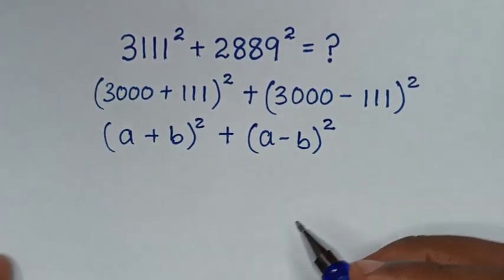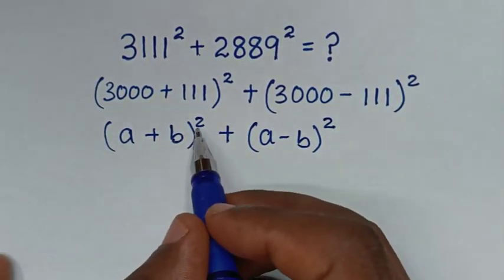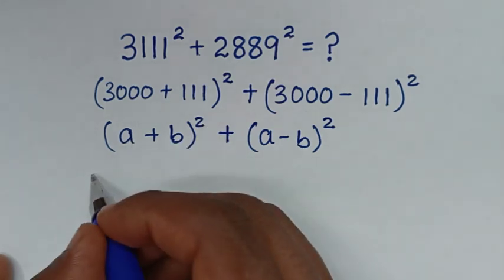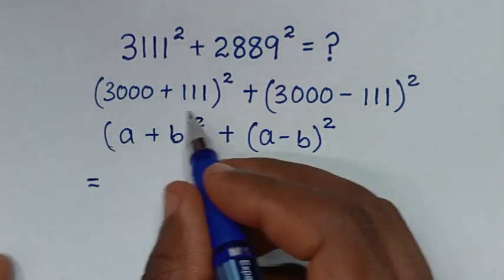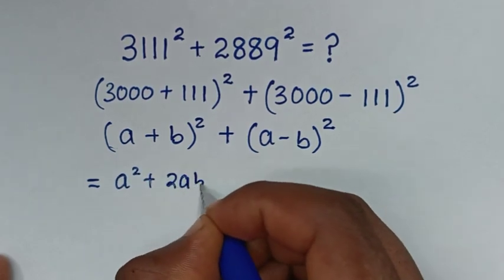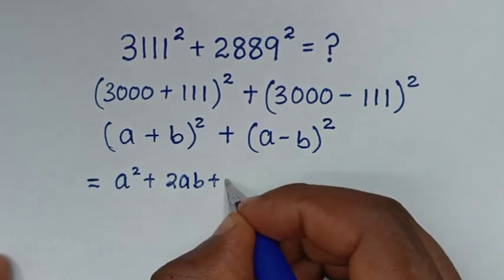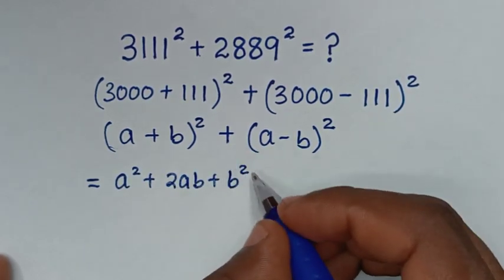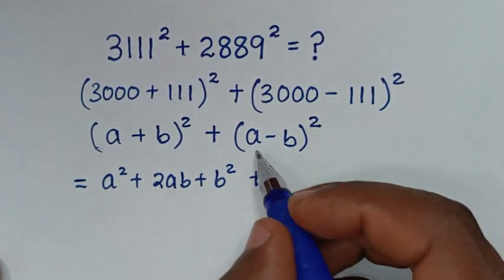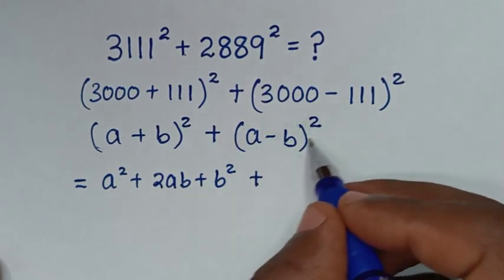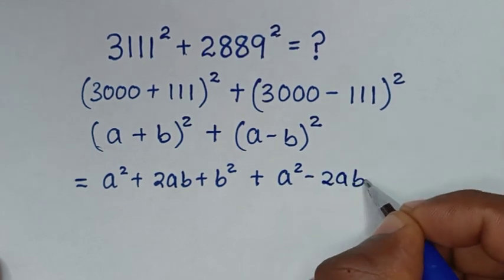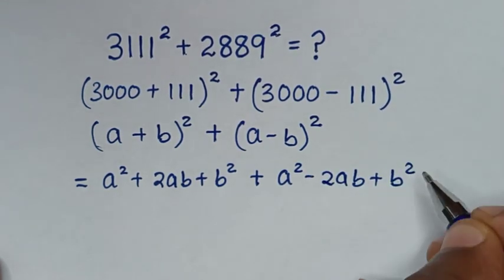Then, in the next step, the expansion of (a plus b) bracket squared will be equal to a squared plus 2ab plus b squared, then plus the expansion of (a minus b) squared, which is a squared minus 2ab plus b squared.